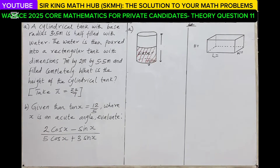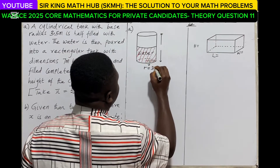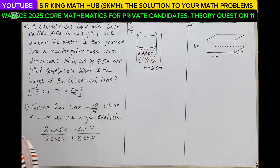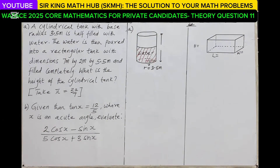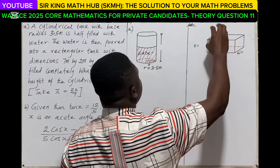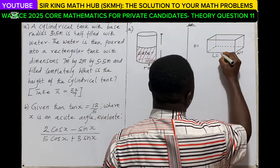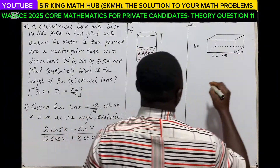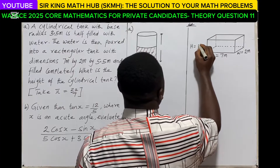Let's begin with part A. The question is under mensuration: a cylindrical tank with base radius 3.5 meters is half filled with water. The water is then poured into a rectangular tank with dimensions seven meters by two meters, and the height is given as 5.5 meters.